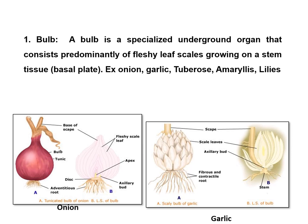The first specialized plant part is the bulb. Bulbs are produced by monocot plants in which the usual plant structure is modified for storage and reproduction. A bulb is a specialized underground organ that consists predominantly of fleshy leaf scales growing on stem tissue — that is, from the basal plate, it has axillary buds which are used for further multiplication. A bulb is divided into two types: number one, the tunicated bulb, and number two, the scaly bulb.